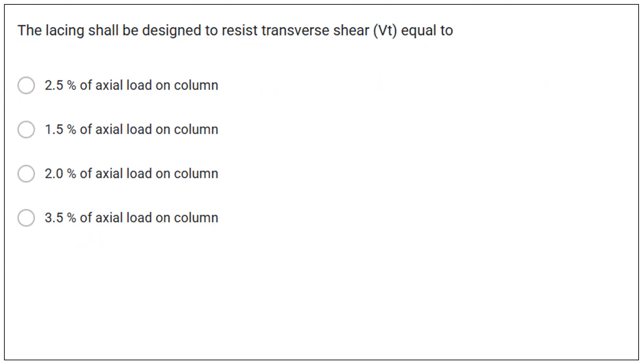Then next question. Question number 13. The lacing shall be designed to resist transfer shear which is VT and this transfer shear is equal to 2.5% of axial load on column. So first option is correct here.